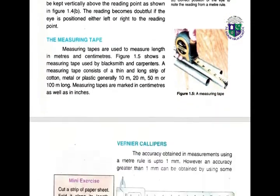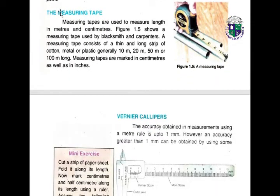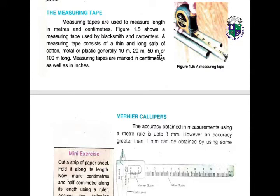Measuring tapes are used to measure length in meters and centimeters. A measuring tape consists of a thin and long strip of cotton, metal, or plastic, generally of 10, 20, 50, or 100 meters long. Measuring tapes are marked in centimeters as well as in inches, and are used by blacksmiths and carpenters.